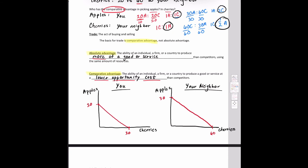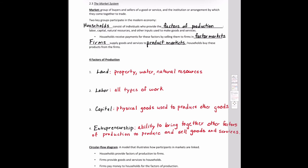Let's move on from comparative advantage — we spent quite a bit of time on that, but I wanted to make sure you understood how the ratios were calculated. So let's go ahead and move on to the market system, our last section of this chapter.